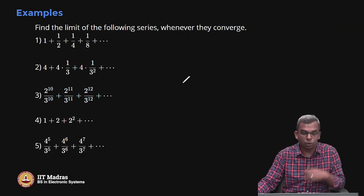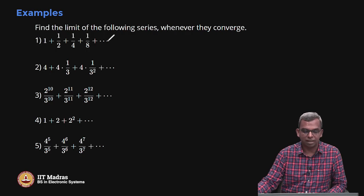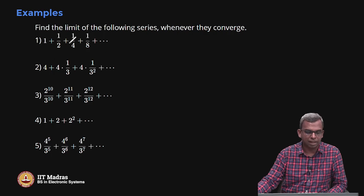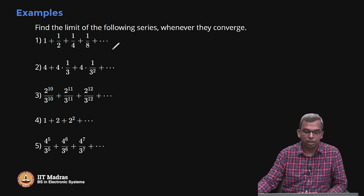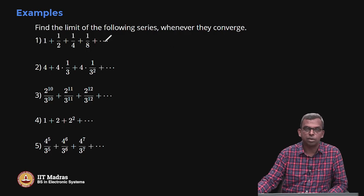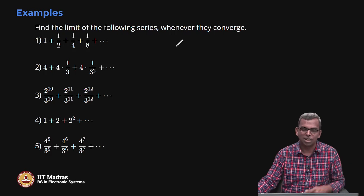Now that we know how to sum a geometric series, we can find the sum very easily. The first task is to identify whether the series is geometric — do you always get the next term by multiplying by a constant number? The ratio of consecutive terms should be the same. For example: (1/2)/1 = 1/2, (1/4)/(1/2) = 1/2, (1/8)/(1/4) = 1/2. That constant ratio confirms it is geometric. The first example sums to 1/(1−1/2) = 2.